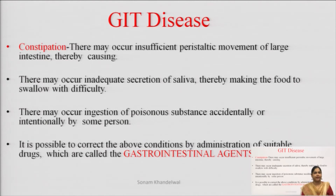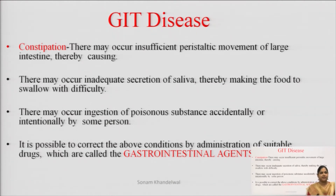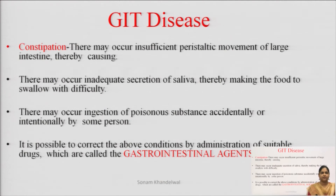Inadequate secretion of saliva also makes it difficult to swallow food. Ingestion of a poisonous substance, either accidentally or intentionally, also results in a GIT disease.